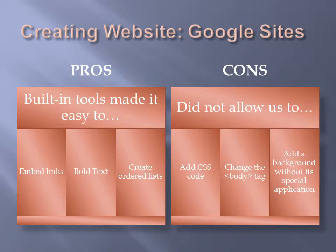However, Google also limited our use in other areas. Google did not allow us to add CSS codes to manipulate the text color and attributes when we hovered over a link. The Google Sites Editor also did not allow us to change the body tag to add different backgrounds to individual pages using HTML, and it required us to use its special application to add any background at all. Furthermore, the Google Sites Editor added unnecessary applications such as commenting ability and automatic titles, which we didn't want, so we had to uncheck these features under the Page Options tab.